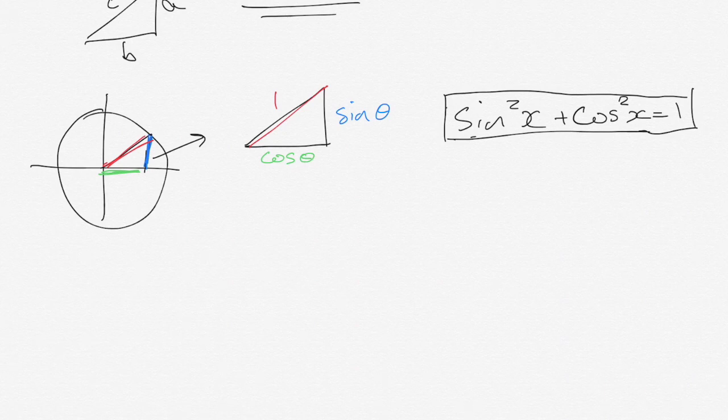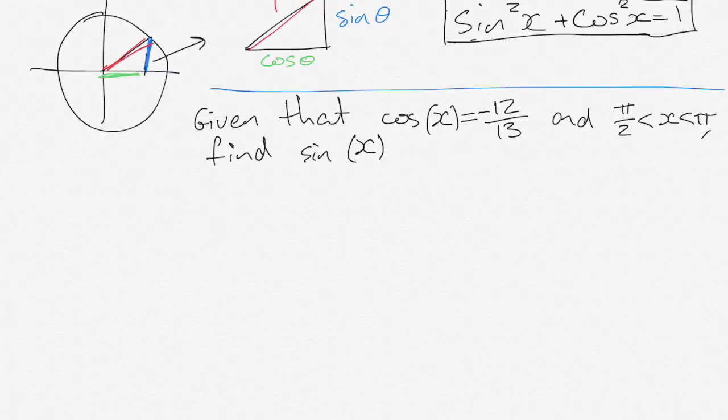So here's a typical question that might get asked of us in a test or an exam situation. Given that cos x equals negative 12 on 13 and pi on 2 is less than x which is less than pi, find sin x.